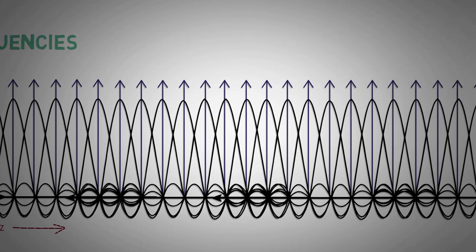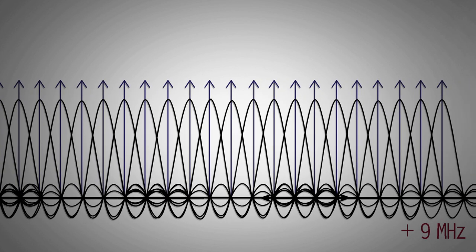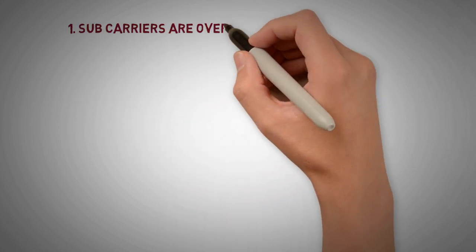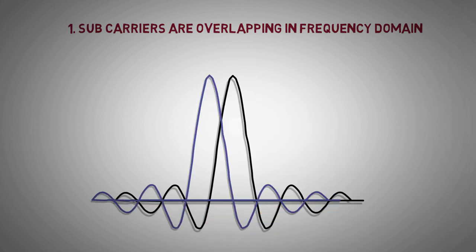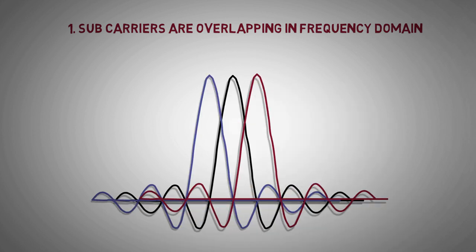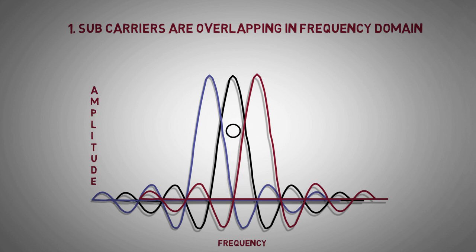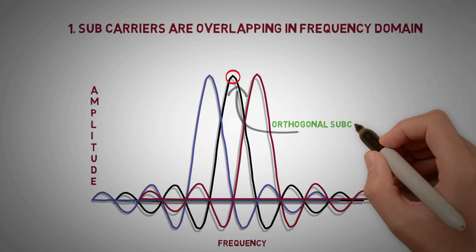Basically we are having 1200 such sinc waves. There are two points to be noted here. Firstly, the sub-carriers are overlapping in frequency domain. As we can see, the sub-carriers are placed in a manner that all the other sub-carriers have a zero component at the peak of one sub-carrier. Such sub-carriers are called orthogonal.